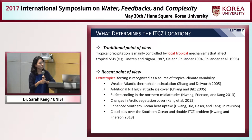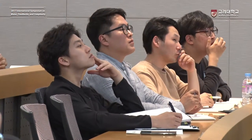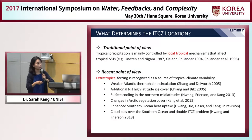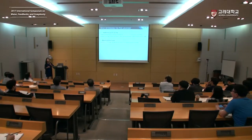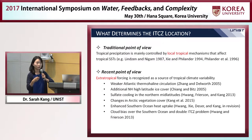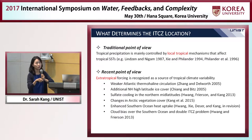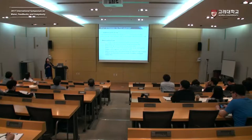Traditionally, tropical precipitation was considered to be mainly controlled by local tropical mechanisms that affect tropical sea surface temperatures. Since the ITCZ is located at low latitudes, it seemed natural to think it would only be affected by tropical mechanisms. However, more recently the community has recognized that extratropical forcing — forcing outside the tropics — is also a key source of tropical climate variability. I will try to convince you that extratropical forcing is the key source for modulating tropical precipitation distribution.